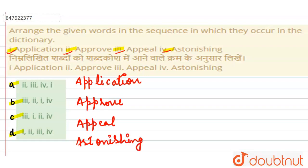Dekhiye, in sab words mein hume dekhenge, toh sabse pahle letter jo hai, A hai sab mein. Right? So hum second dekhenge: P, P, P, P and S.